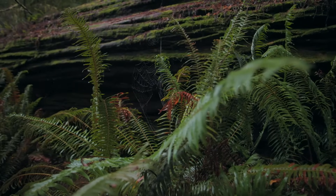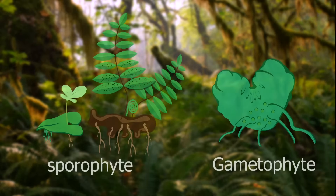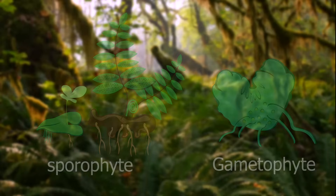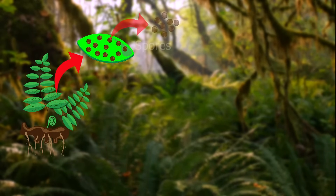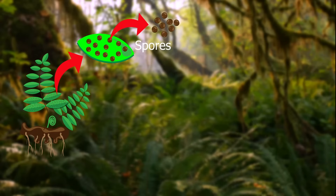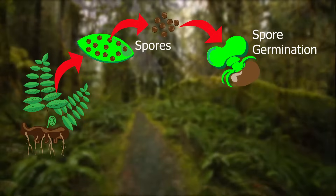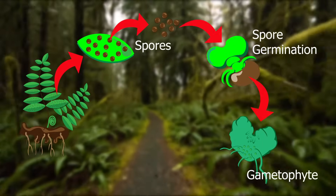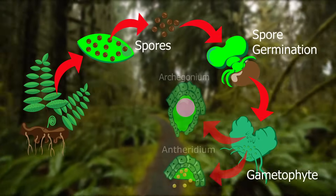Ferns are unique amongst land plants in that they have two separate living structures in their reproductive cycle: the sporophyte and the gametophyte. The leafy fern plants we see in the bush that produce spores are sporophytes. When the spores are released by the sporangia, if they land in a hospitable environment, they can grow into a tiny plant called the gametophyte.